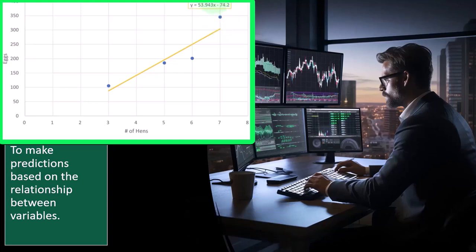But if I can get this line, if I can draw a trend line, then I can make a general prediction. This first hen, for example, three hens made around 100 eggs in a year. And then five hens went up to like 175 or so.